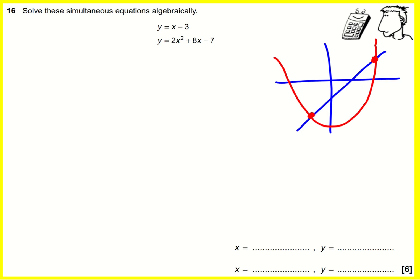And what we can do, therefore, because the y values are the same when they cross, is we can set them equal to one another. We can simply say that x minus 3 equals 2x squared plus 8x minus 7. And I've created essentially a quadratic equation. Now what I want to do is I want to get all the terms on one side and make it equal to 0.